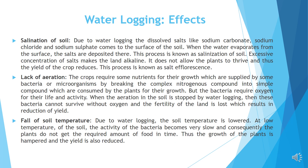The effects of waterlogging. Salination of soil: Due to waterlogging, dissolved salts like sodium carbonate, sodium chloride and sodium sulphate come to the surface of the soil. When the water evaporates from the surface, the salts are deposited there. This process is known as salinization of soil. Lack of aeration: The crops require some nutrients for their growth which are supplied by bacteria or microorganisms by breaking complex nitrogenous compounds into simple compounds consumed by the plants. But the bacteria require oxygen for their life and activity.